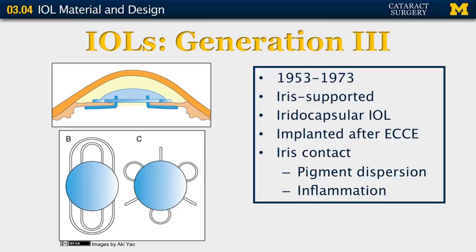The third generation lenses span from the early 1950s into the early 1970s. This is yet another completely different design in which the iris was used to support the lens. The diagrams below show some of the designs of iris clip lenses, and the top image shows how that lens was held in place around the iris. These lenses had constant iris contact and ultimately led to pigment dispersion as well as chronic inflammation.